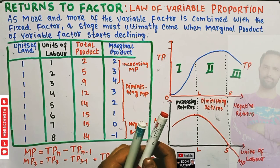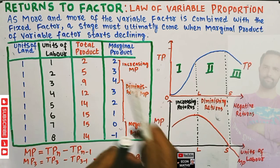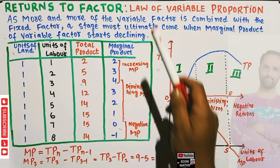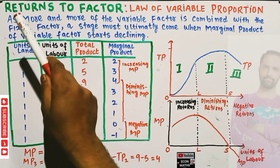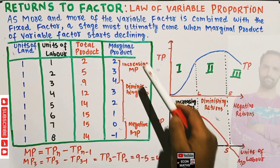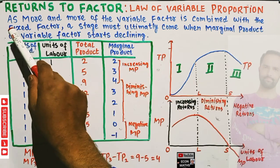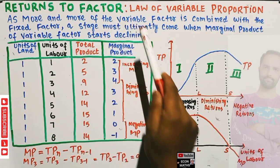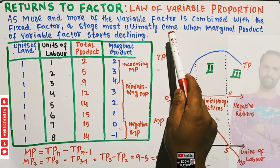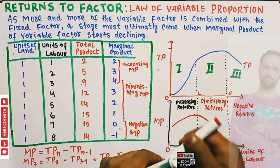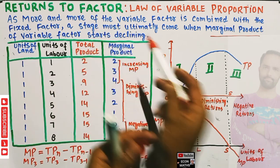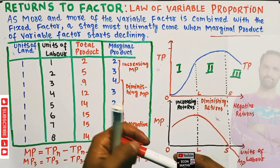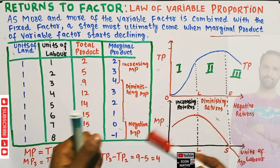In this video we will learn about the concept of returns to factor, what we call the Law of Variable Proportion. The Law of Variable Proportion says that as more and more of the variable factor is combined with a fixed factor, a stage must ultimately come when the marginal product of the variable factor starts declining.